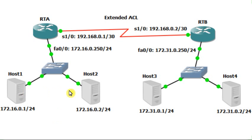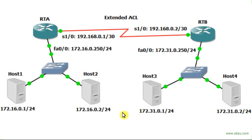The first network has host 1 and host 2, the second network has host 3 and host 4. We look at the IP addresses assigned to each one of the hosts in both networks, and then we determine that we need to implement an extended type of access list, which will make a difference in filtering traffic between specific hosts.